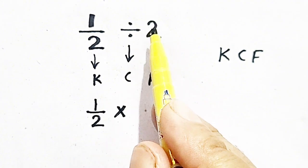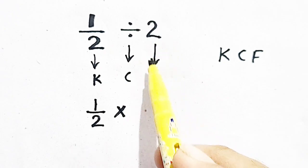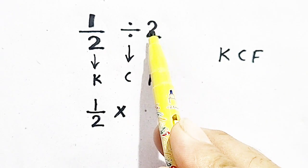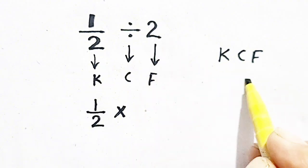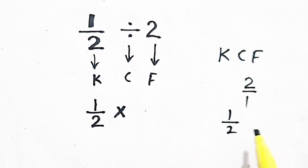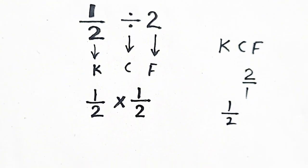And F means flip. We have to flip 2 or we have to take its reciprocal. Basically, 2 is 2 over 1, and when we flip it we will get 1 by 2. So flip 2 means it will become 1 by 2.